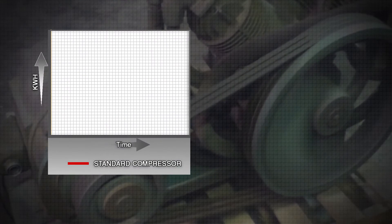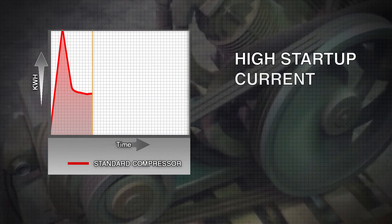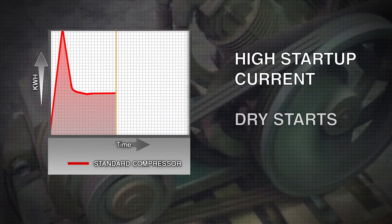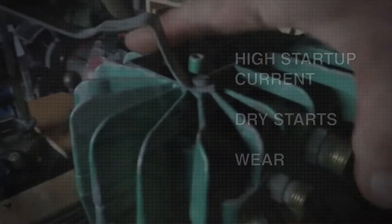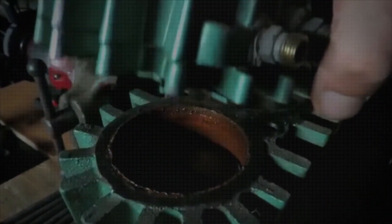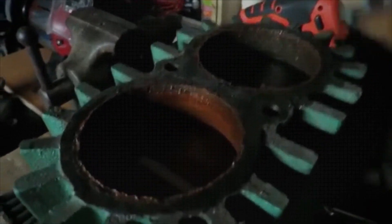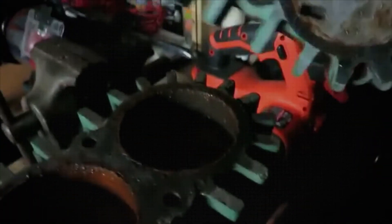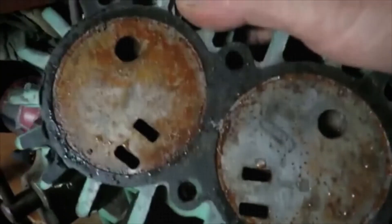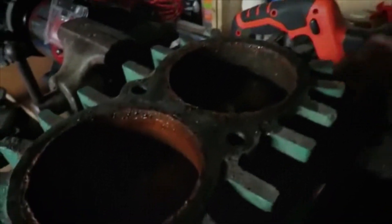Using a naturally closed unloader valve during startup results in high startup current, dry starts, and wear that further diminishes the system efficiency over time. This also creates a supercharge in moisturized air, causing condensate water to become trapped in the compressor pump crankcase, reducing the life of the lubricants.